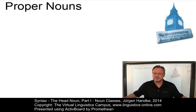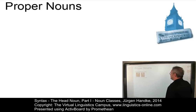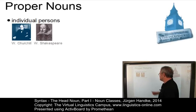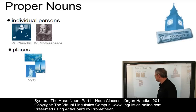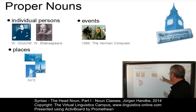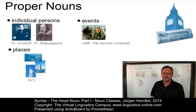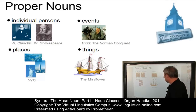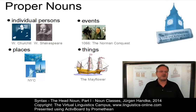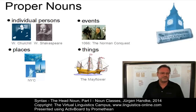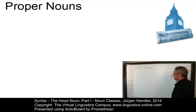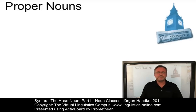Let us first list some examples. A proper noun is basically a name identifying some particular individual persons, such as Winston Churchill or William Shakespeare. Places can be proper nouns, such as New York City. We have events such as 1066, the Norman Conquest. Or things — for example, here, the famous ship Mayflower. Proper nouns have unique reference and are usually capitalized, as you can see over here.